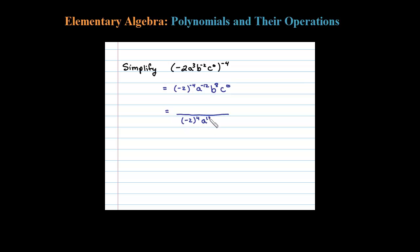Same thing here, this can be written as a to the 12th in the denominator. B to the 8th will be left in the numerator, and then C to the 0, anything to the 0 power is 1 as long as C is not equal to 0.